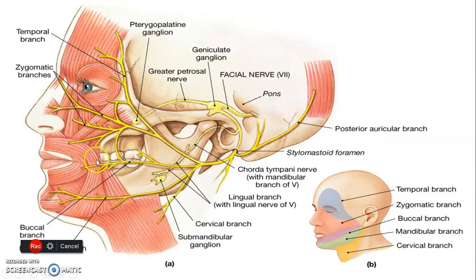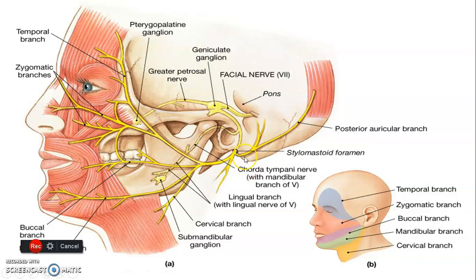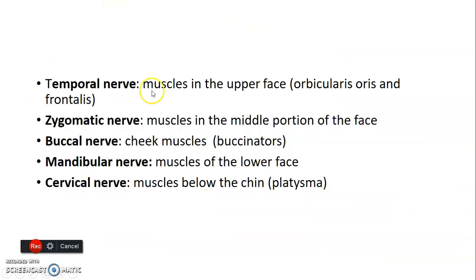You can appreciate the temporal, zygomatic, buccal, mandibular, and cervical branches. The temporal branch goes towards the temporal region, zygomatic to the middle, buccal to the buccinator area, mandibular to the lower face, and cervical nerve below the chin innervating muscles such as platysma. The temporal nerve supplies the upper face including orbicularis oculi and frontalis.